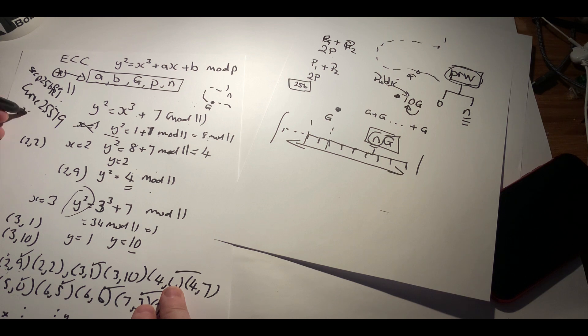The interesting thing with Curve25519 is that the prime number is equal to 2 to the power of 255 minus 19.